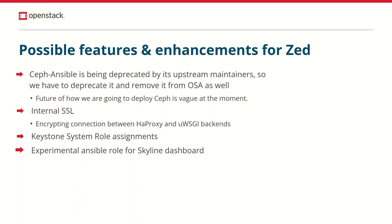Next, we are looking into implementing encryption between our load balancer and the service APIs. We already have a proof of concept that looks very promising. Who knows, maybe we will land it even before the final release. Also, the Keystone system role assignments is a huge OpenStack-wide effort that has been started during the Victoria release cycle, aiming to get better role-based access control in Keystone and policies in projects.